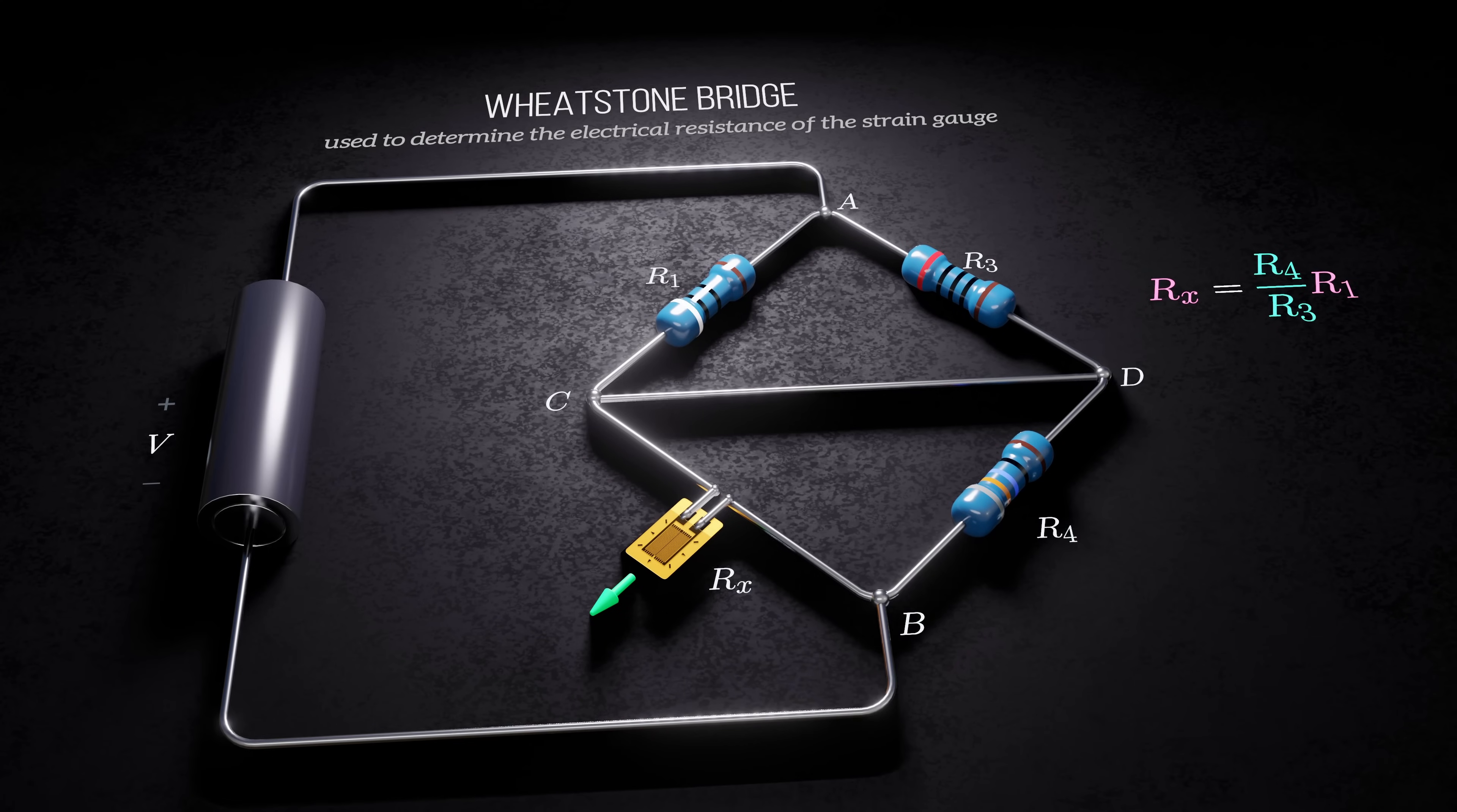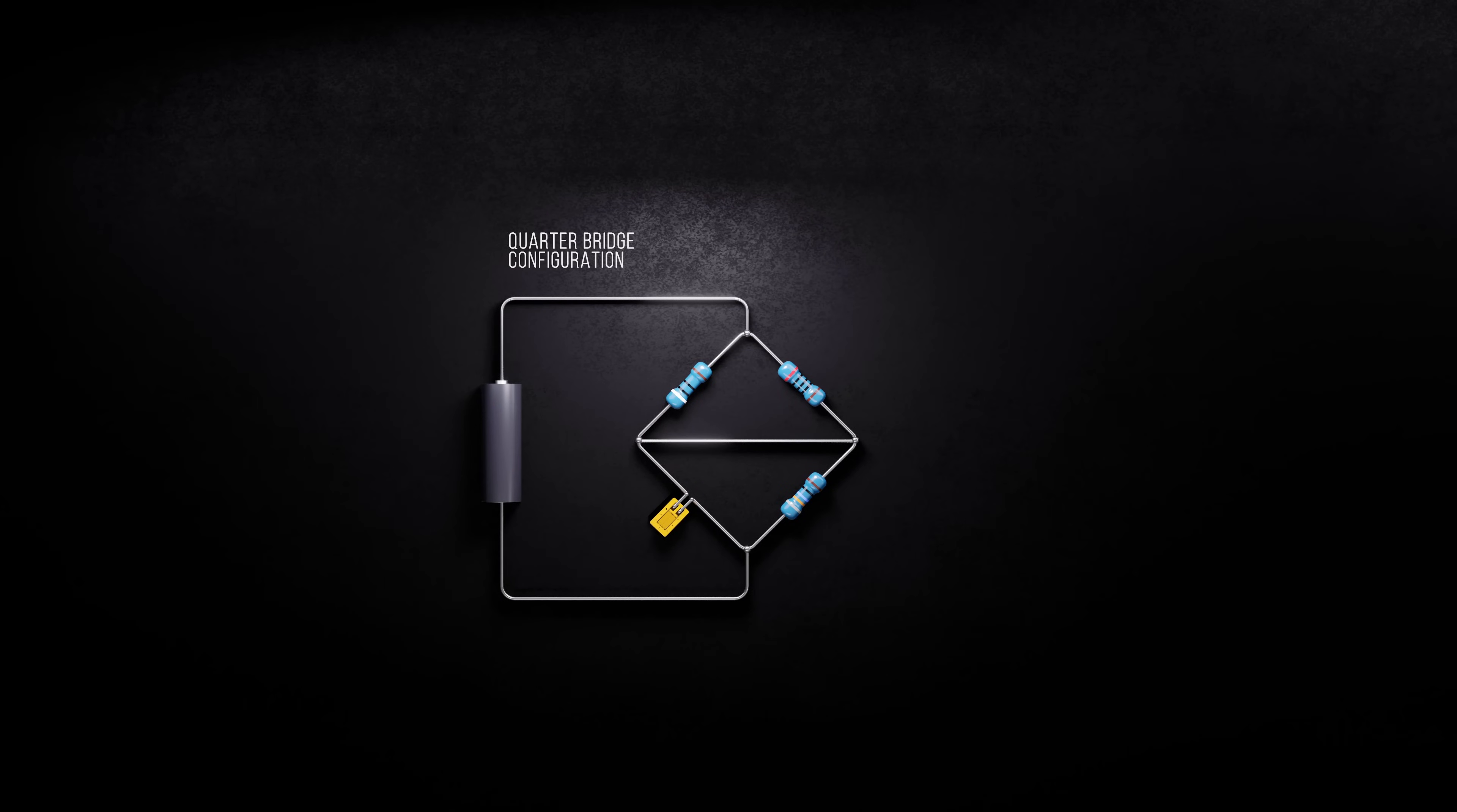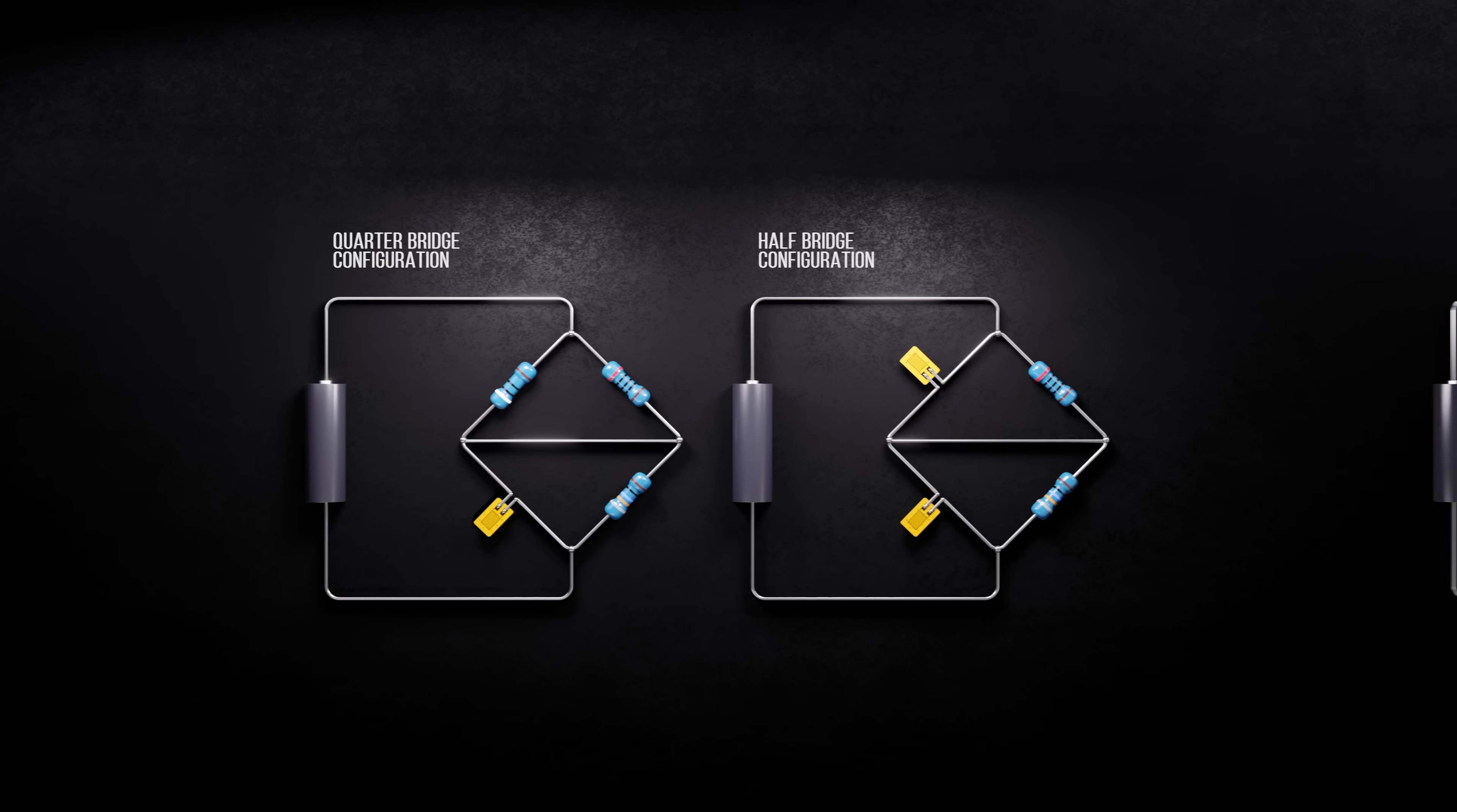The arrangement shown here is called a quarter bridge circuit. The strain gauge occupies one of the four resistors. A half bridge arrangement uses two strain gauges, and a full bridge arrangement uses four.